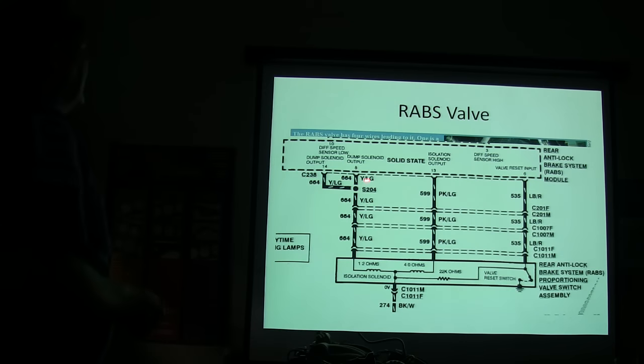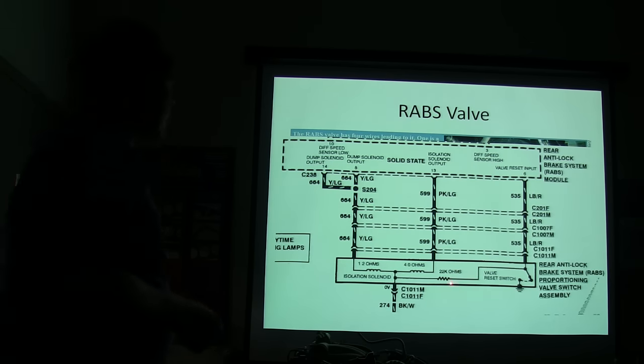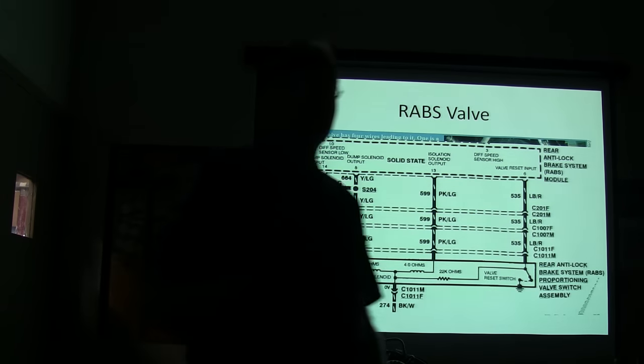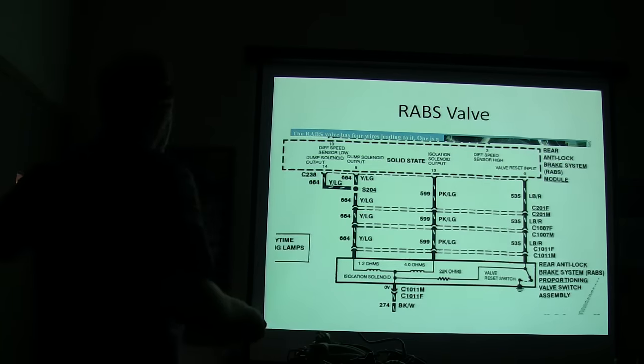All right. So here's the RAB's valve right here. The RAB's valve, I basically should have made that come in there, is a little solenoid here. 1.2 ohms, 4 ohms, 22,000 ohms. Now this is pretty cool here. Anybody got any idea where that 22,000 ohm resistor is there? Why would you put the 22,000 ohm resistor there? What's the point in it?